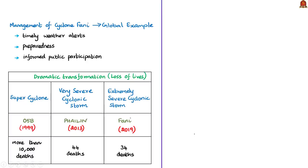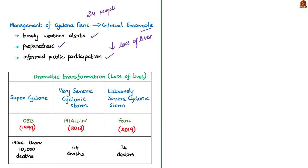The author states that the management of Cyclone Fani has emerged as a global example that timely weather alerts, preparedness and informed public participation can dramatically reduce loss of lives. The management has received recognition from UN organizations. While there were severe material losses and damages to houses, electricity and telecommunications infrastructure, the loss of life stood at 34 people. The author calls this a dramatic transformation from the loss of over 10,000 lives in 1999 when super cyclone 05B struck Odisha. From then, the state government has worked on upgrading preparedness, bringing the casualty count down to 44 during very severe cyclonic storm Phailin in 2013.